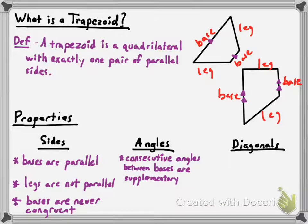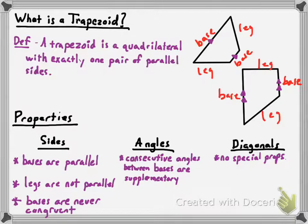When you're just talking about a general trapezoid, there are no special properties about the diagonals. All of these things I've listed are true if you have a quadrilateral with exactly one pair of opposite sides that are parallel to one another.